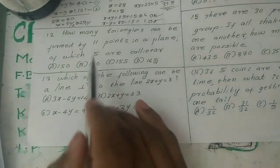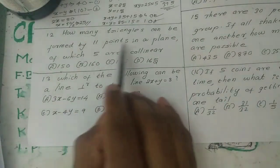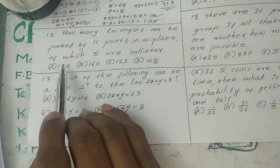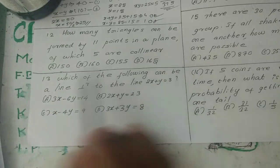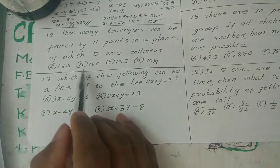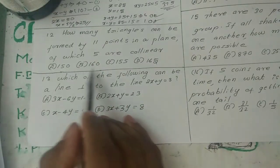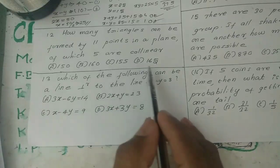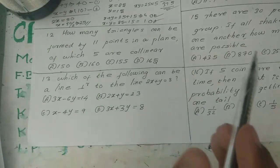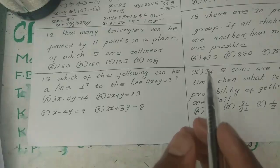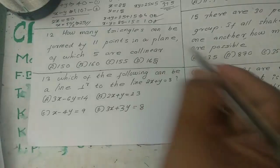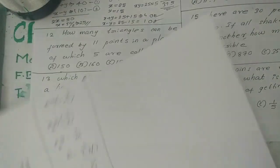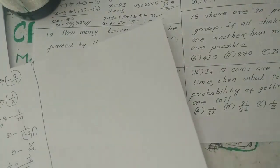The next question: how many triangles can be formed by 11 points in a plane of which 5 are collinear? Options are: A) 150, B) 160, C) 155, D) 165. We will use the combination formula for this.